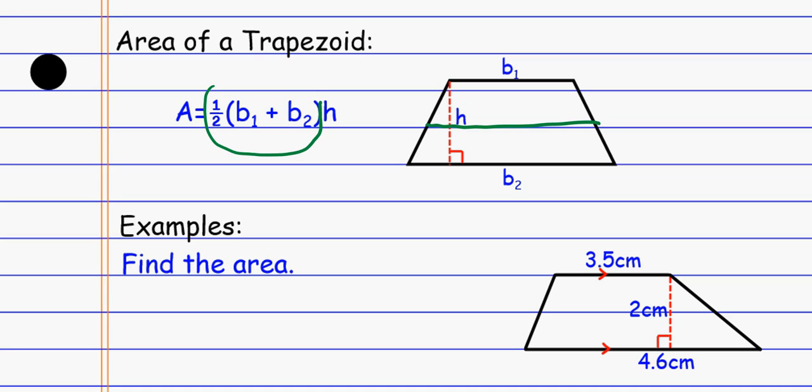That's this guy right here. So it's the average of the bases times the height. It's essentially saying if this thing was like a rectangle with the larger base versus a rectangle with the smaller base, it's like finding those two areas but then taking the average to get the area of the trapezoid. That's really what it comes down to - the average of the bases times the height.